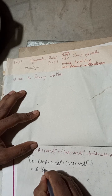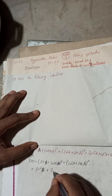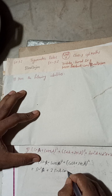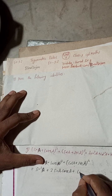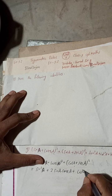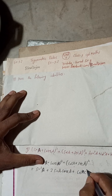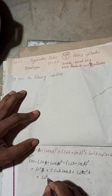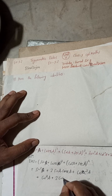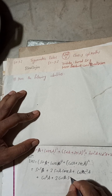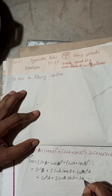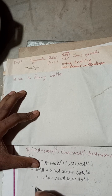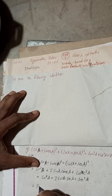Expanding using (a+b)² = a² + 2ab + b²: this gives sin² A plus 2 sin A into cosec A, plus cosec² A. In the same way, plus cos² A plus 2 cos A into sec A, plus sec² A. Now, sin² A plus cos² A equals 1.